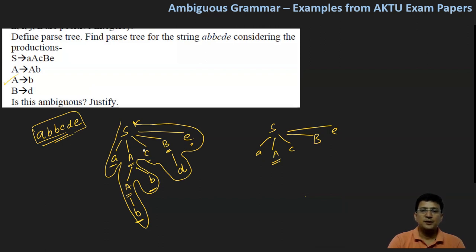So let's see if more derivations are possible with this. A produces A, B. Derivation tree is possible, leftmost derivation tree is possible for the given grammar.